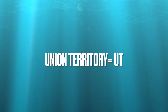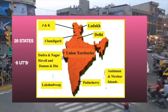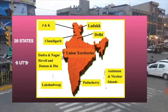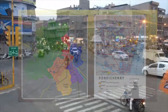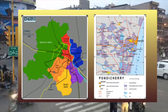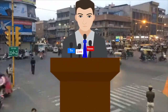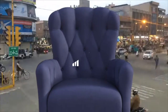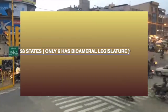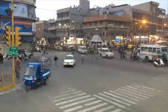Going forward, we will abbreviate union territories as UTs. India has 28 states and 8 UTs. Out of the 8 UTs, two of them have their own legislative assemblies: the National Capital of Delhi and Puducherry. The rest of the UTs are governed by the president, who has the power to appoint either a governor or an administrator acting as representative of the president. Out of the 28 states, only six states have a bicameral legislature — meaning two houses, just like the parliament.